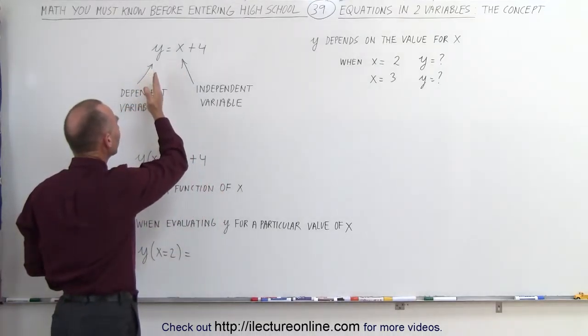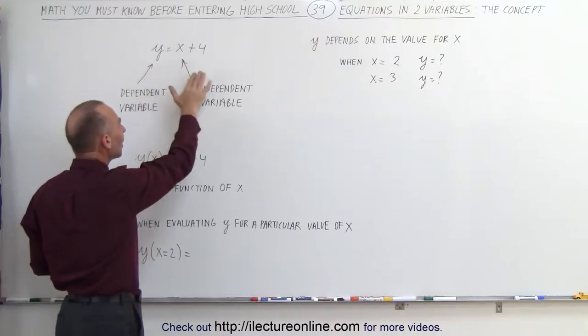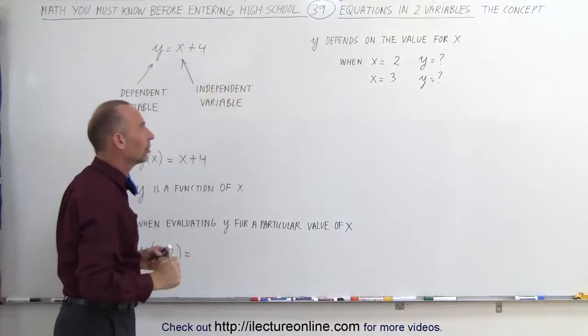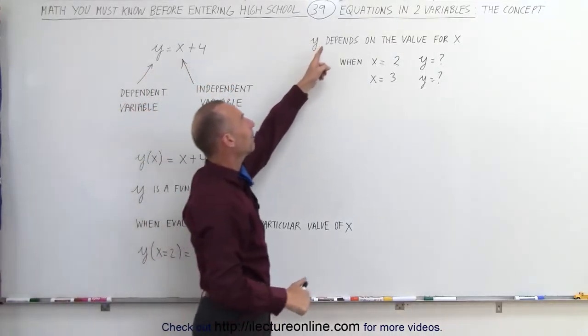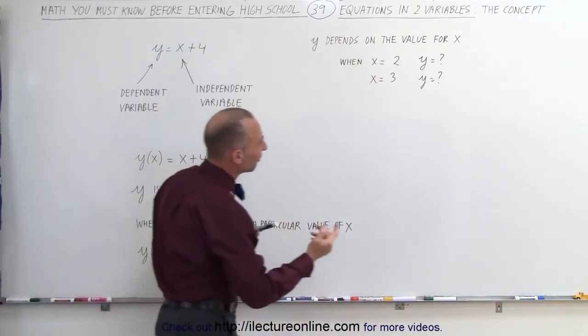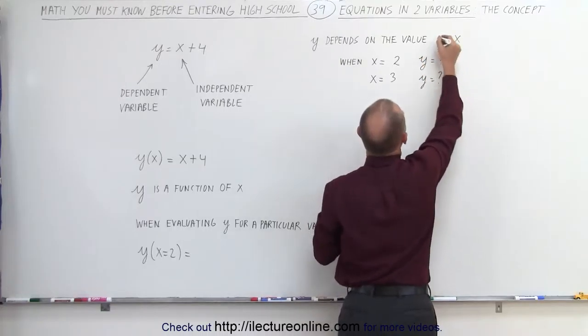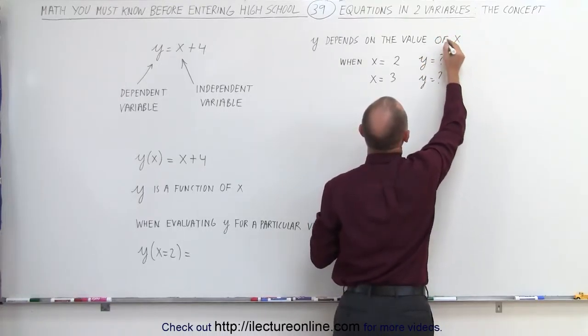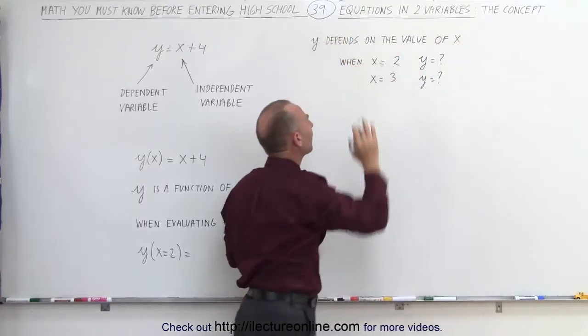the one on the left side, is called a dependent variable and the variable on the right side is called an independent variable. In other words, y depends on the value of x. Whatever value we plug in for x, the value of y will depend on that.